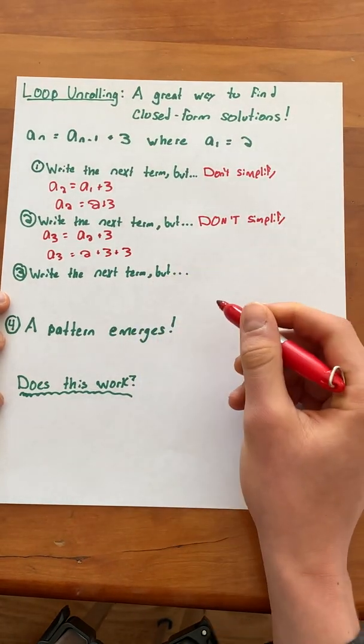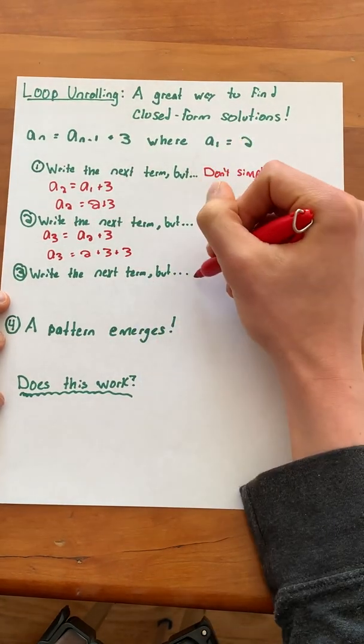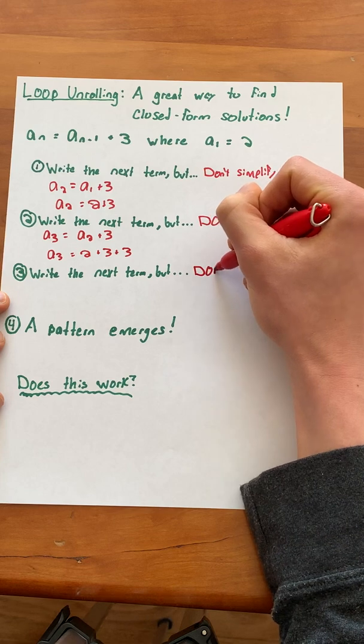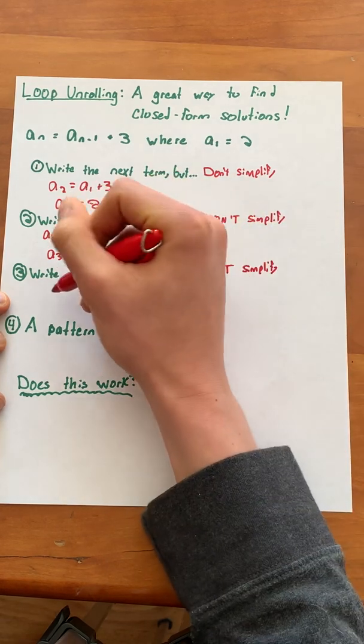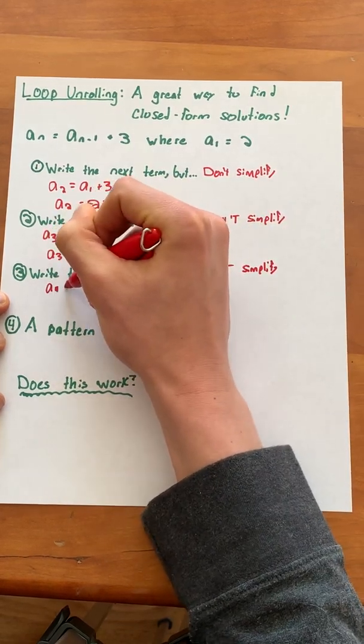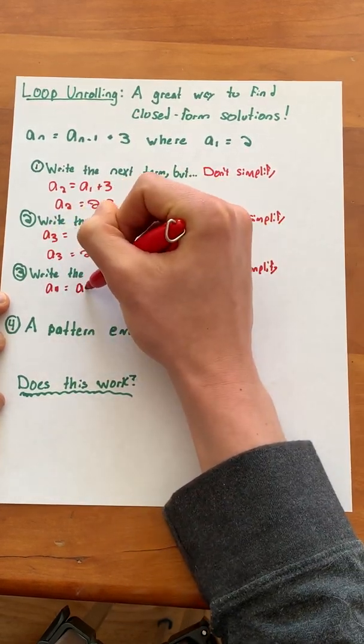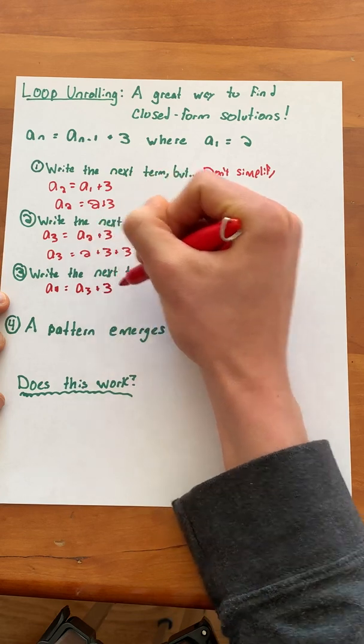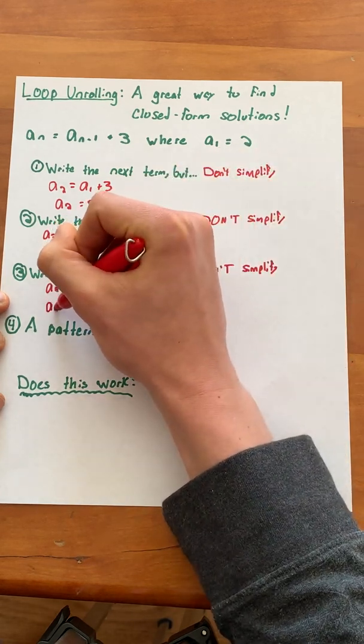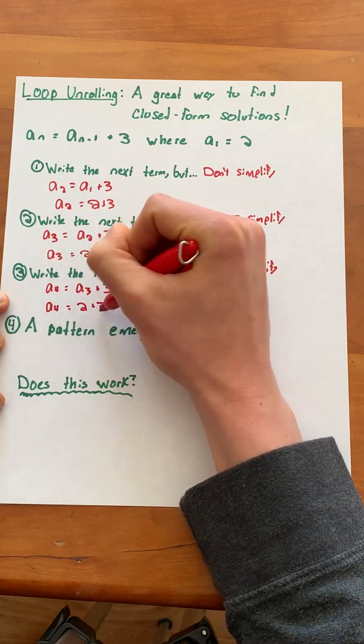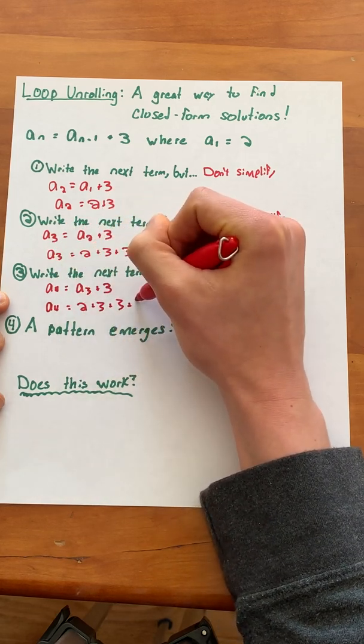Now again we'll write the next term but you're probably getting used to this - we don't simplify. So we get a of 4 equals a of 3 plus 3. Again we already solved for a of 3 so we get a of 4 equals 2 plus 3 plus 3 plus 3.